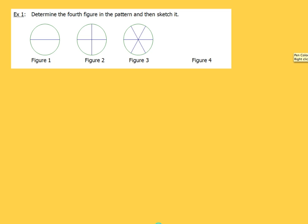For this piece we've got to determine the fourth figure in the pattern and then sketch it. So let's take a look at figure 1. We only have 2 pieces. In figure 2 we've got 4 pieces. And in figure 3, now we're up to 6 pieces.